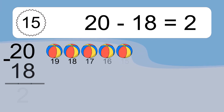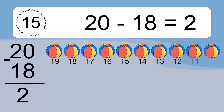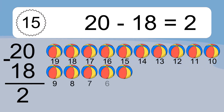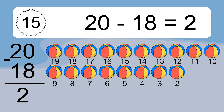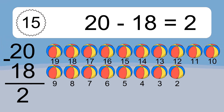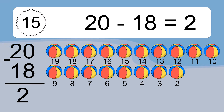20 minus 18 equals what? 20 minus 18 equals 2. Let's count it! 19, 18, 17, 16, 15, 14, 13, 12, 11, 10, 9, 8, 7, 6, 5, 4, 3, 2.